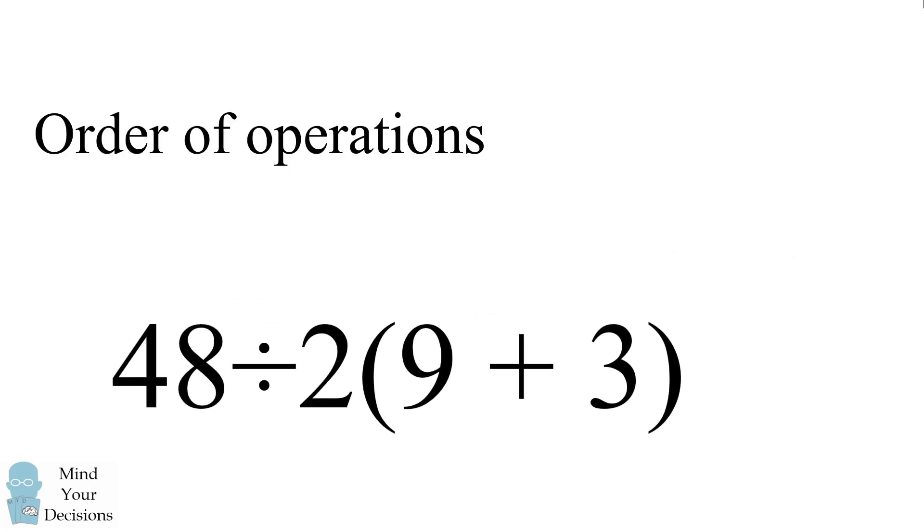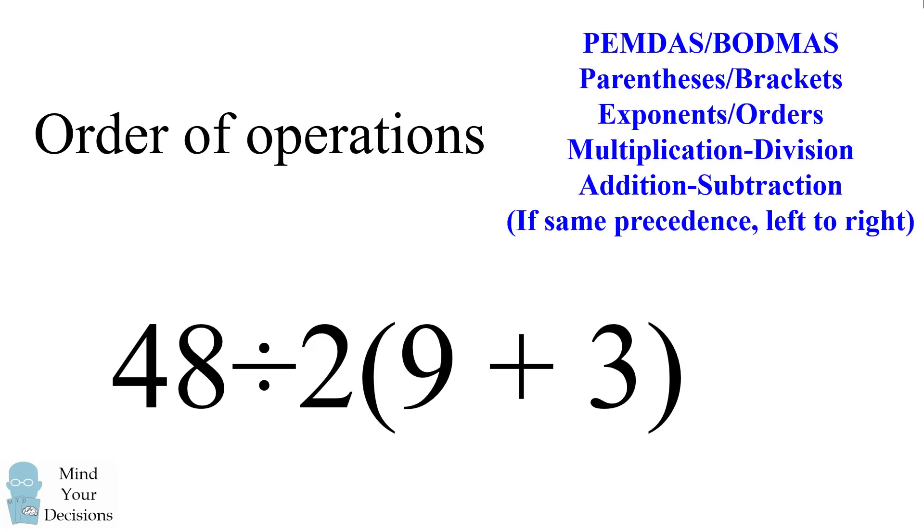We can solve for the correct answer using the order of operations. These are commonly remembered as PEMDAS or BODMAS, and these are a precedence of how we evaluate operations. This will be parentheses brackets, exponents orders, multiplication division, and addition subtraction. Furthermore, if you have operations of the same precedence, you should evaluate them from left to right.